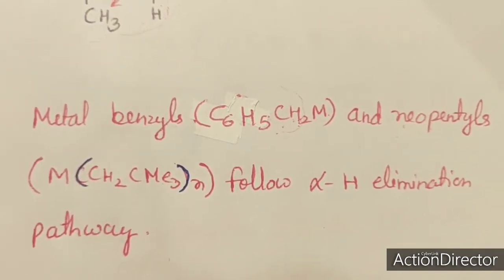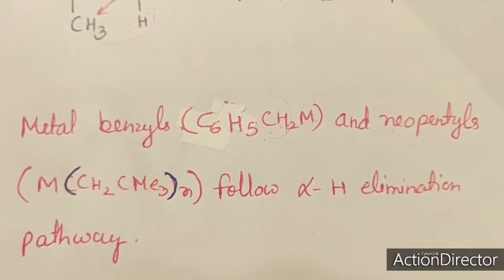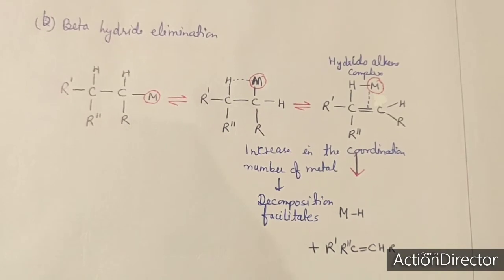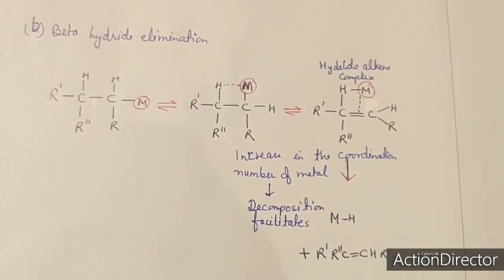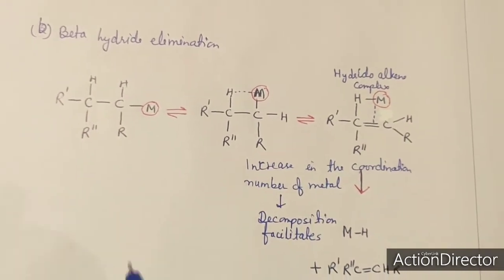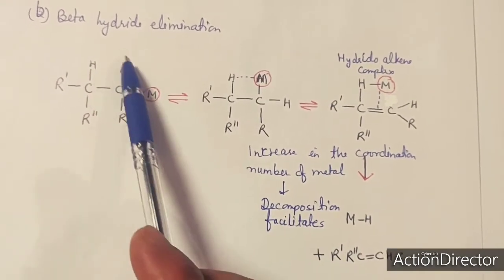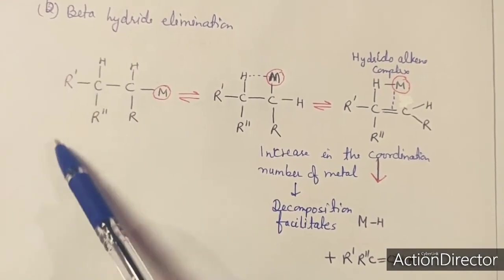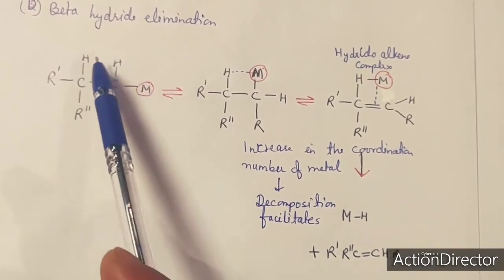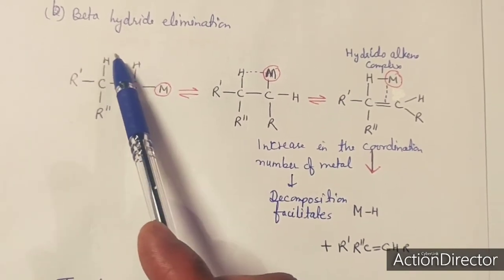The most common pathway of transition metal alkyl decomposition is beta hydride elimination. In organometallic compounds where a beta hydrogen is present — this is the alpha carbon, this is the beta carbon, and this is the beta hydrogen — when this beta hydrogen is present, it can be eliminated.